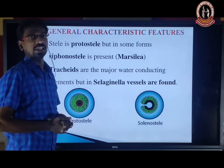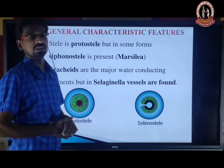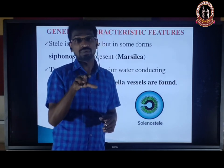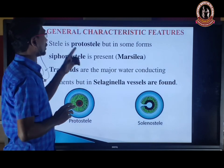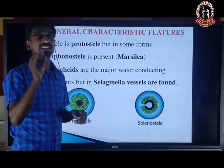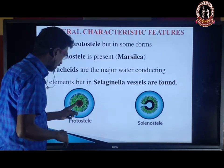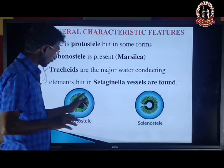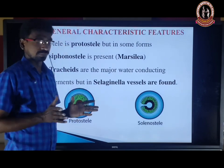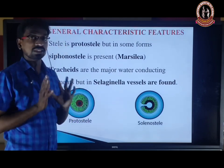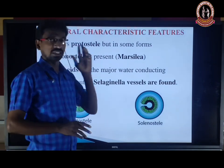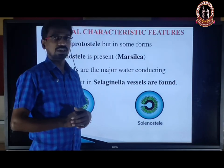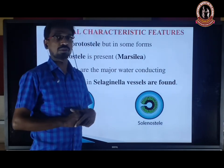Under the internal structure, we can see the stele — which means the arrangement of vascular tissues in the stem or root. The basic stele is protostele: xylem surrounded by phloem (the red area indicates xylem; the green indicates phloem). Siphonostele is seen in Marsilea — where a leaf gap is present. That is siphono- or solennostele.